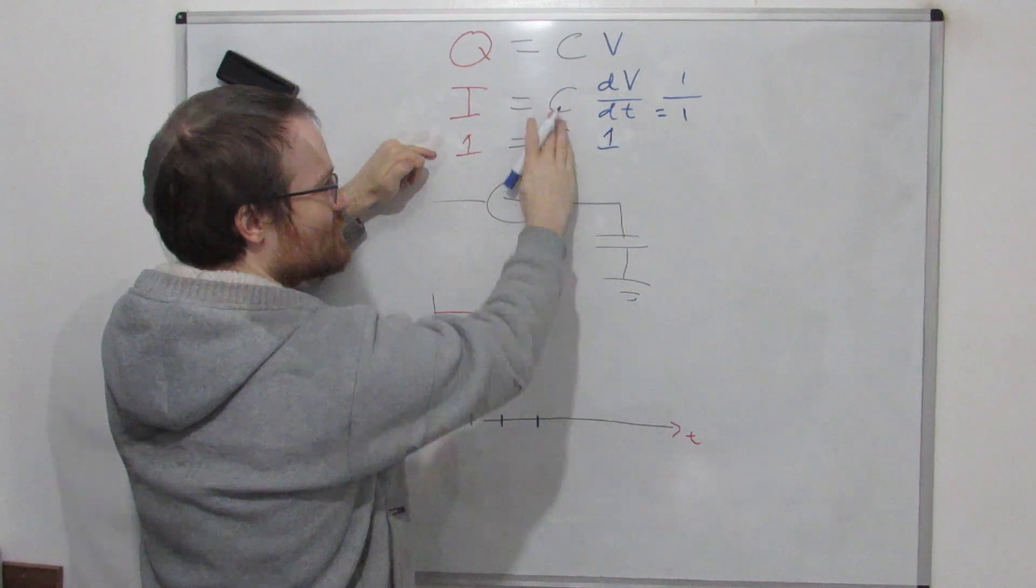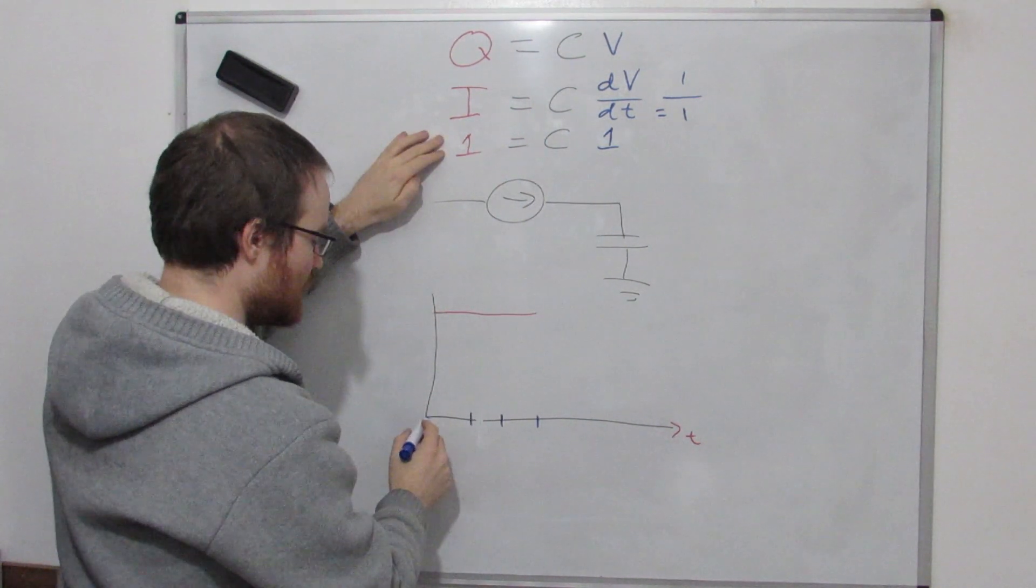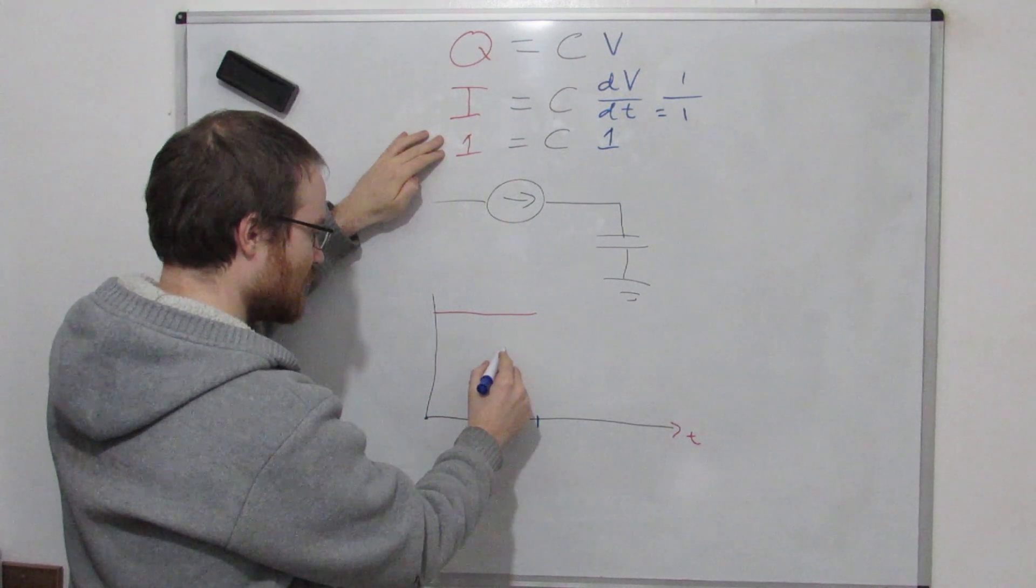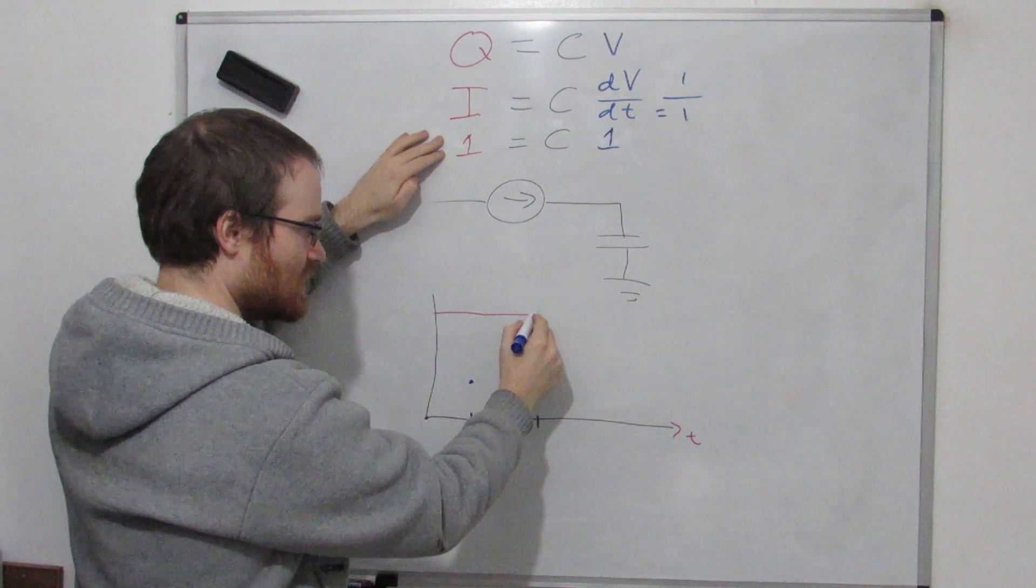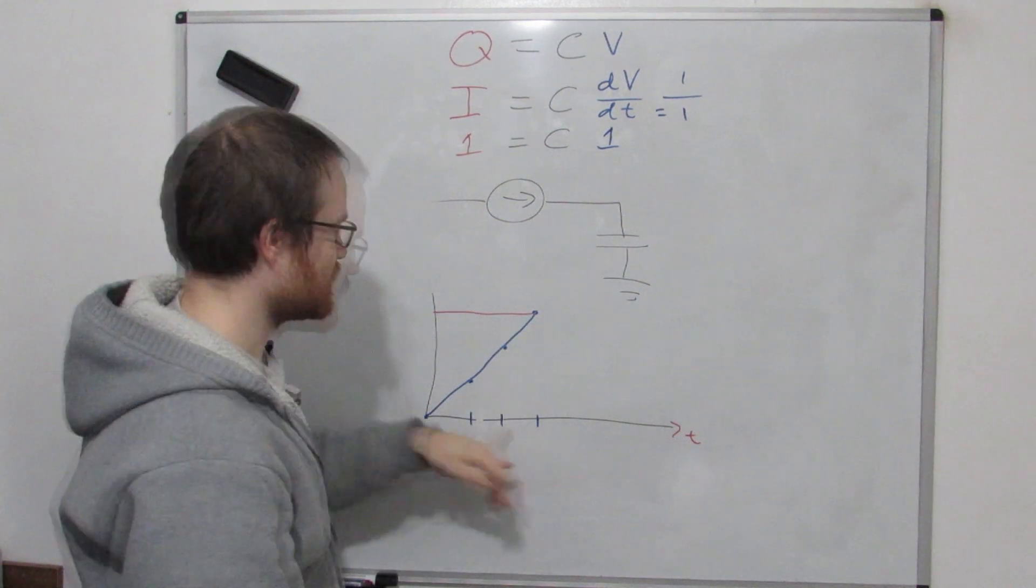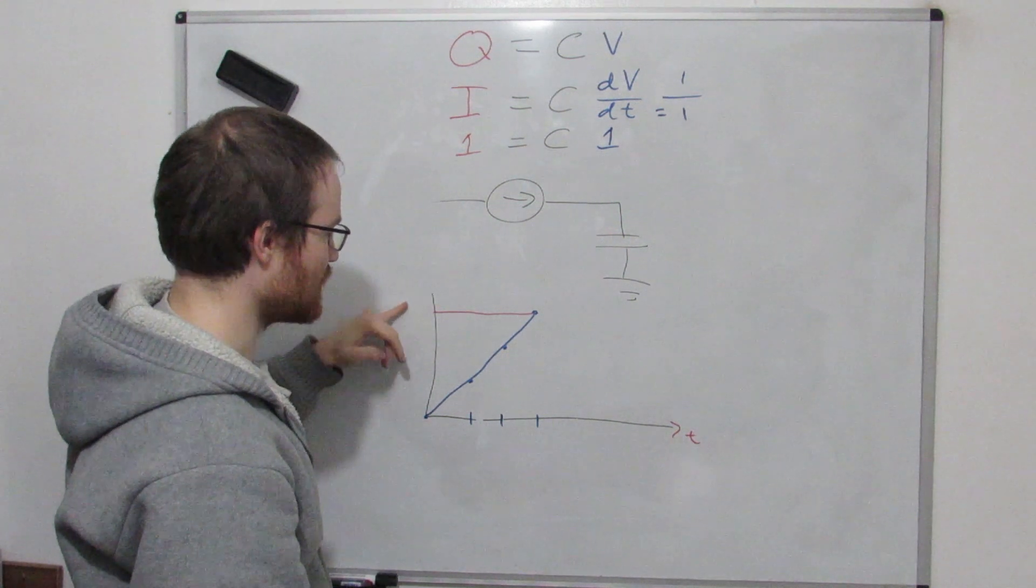If we start from zero, that means we're going to go across one, and up one, and then we're going to go across another one, and then we're going to go up another one, and then we're going to go across another one again, and then we're going to go up another one. So now, after three seconds, we've charged up the capacitor to three volts.